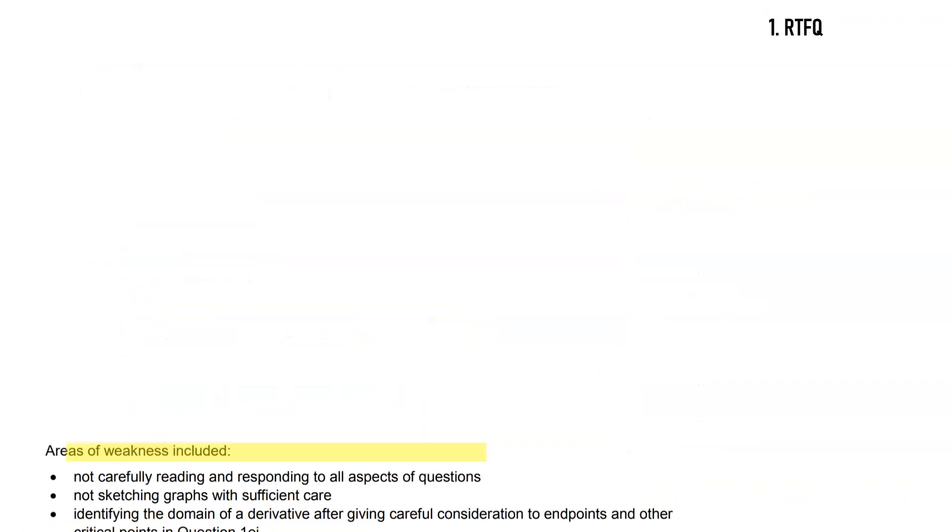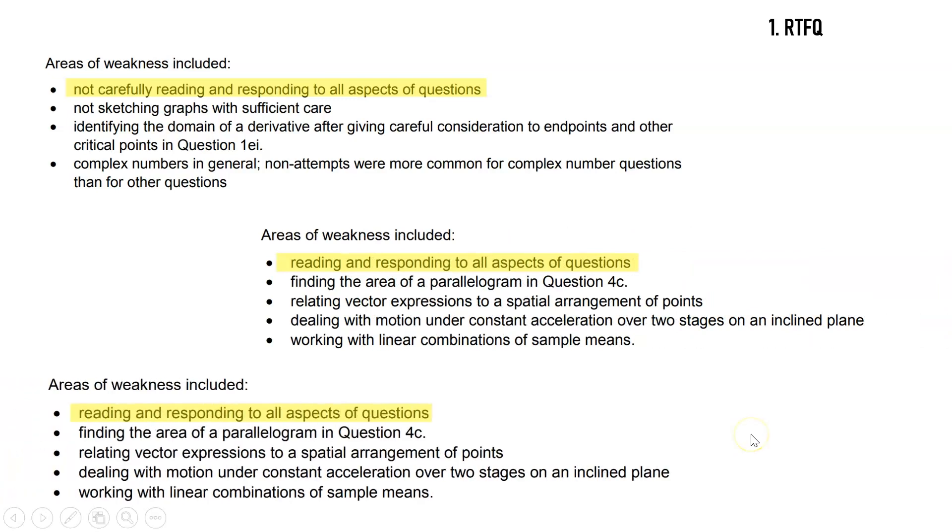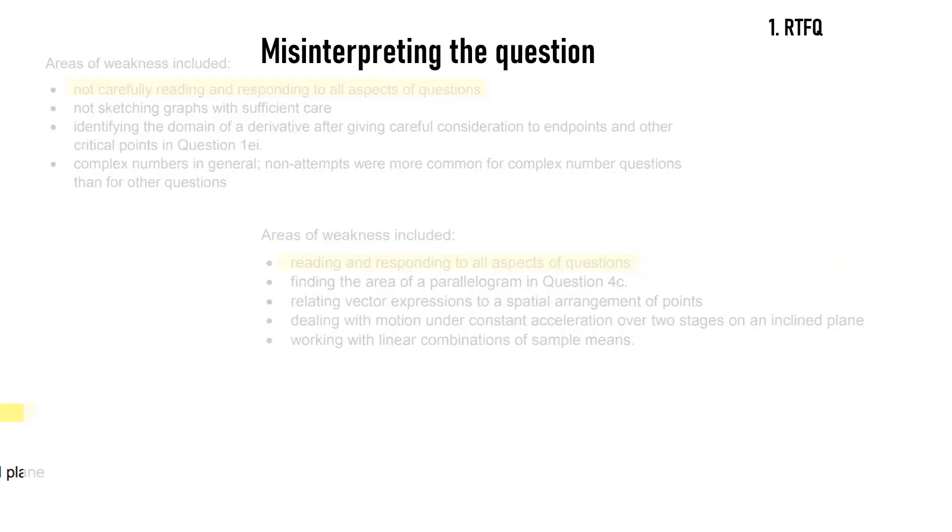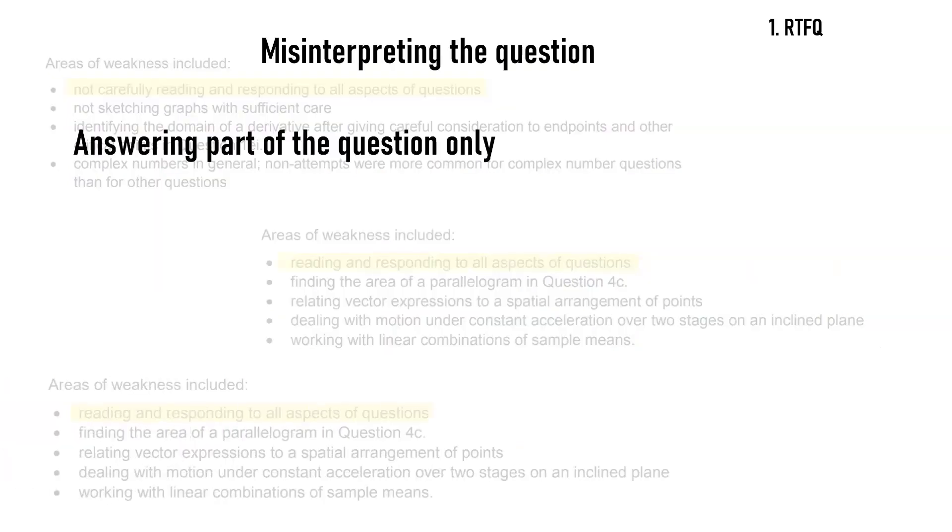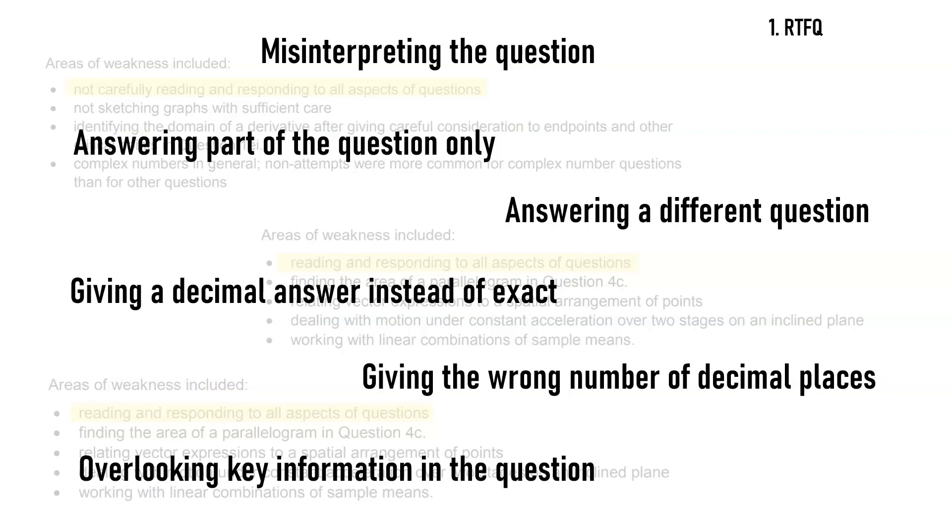So if you've done some practice exams, you'll know every year on the VCE assessors report, they always say that students had trouble reading and responding to all aspects of the questions. Now that could be anything from misinterpreting the question, answering only part of the question, answering a different question or a slightly different question, giving a decimal answer instead of an exact one, which should be the default, or giving a decimal answer but the wrong number of decimal places, kind of annoying, or overlooking some key information in the question, kind of like that domain restrictions one we just saw.